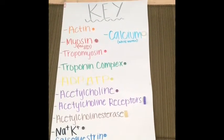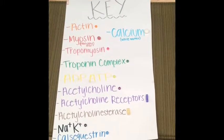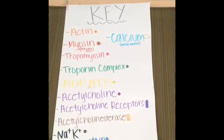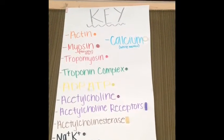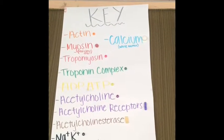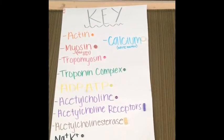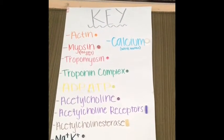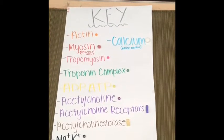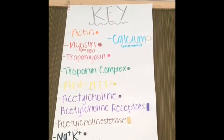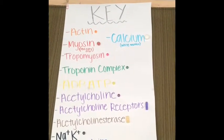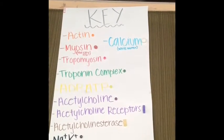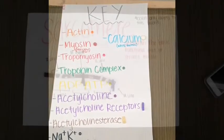Acetylcholine will be represented by a purple bead. Acetylcholine receptors will be represented by a purple straw. Acetylcholine esterase will be represented by a brown or gold gummy bear. Sodium and potassium will be represented by black beads. Calsequestrin will be represented by a blue bead. And calcium will be represented by white mentos.